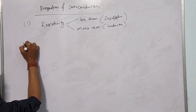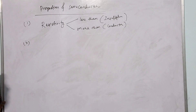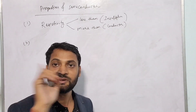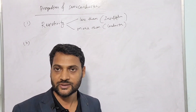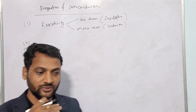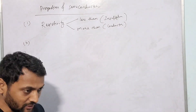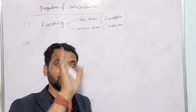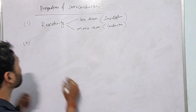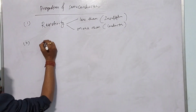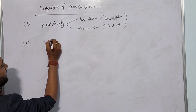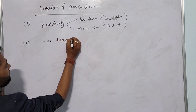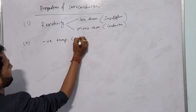The second point is that semiconductor has a negative temperature coefficient. That means if we keep on increasing the temperature, the resistivity decreases — negative temperature coefficient.